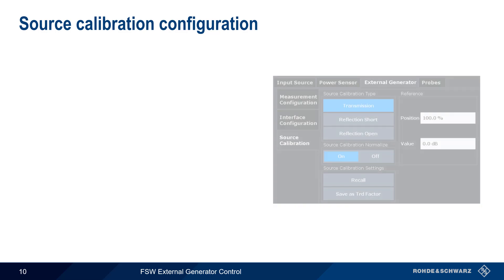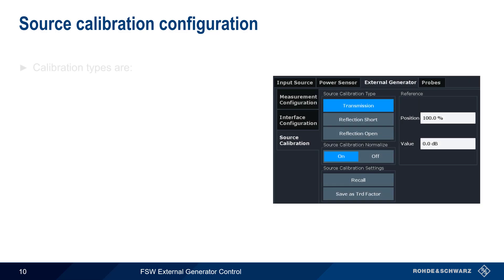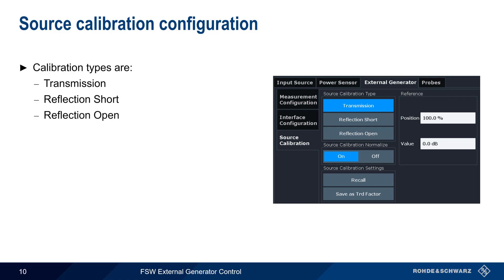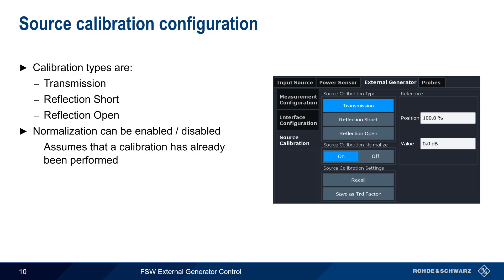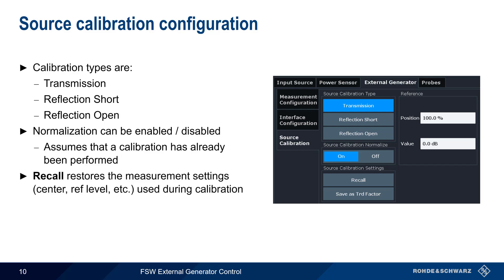Calibration is configured and run from the Source Calibration tab. There are three calibration types: transmission, reflection short, and reflection open. Note that if both a short and an open calibration are performed, the reference trace is calculated from their average. Normalization can be enabled or disabled, assuming calibration has already been performed. The Recall button does not recall saved calibration data, but rather restores the measurement settings that were used when calibration was last run — useful if instrument settings were changed after calibration.